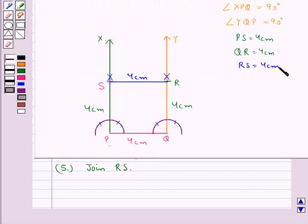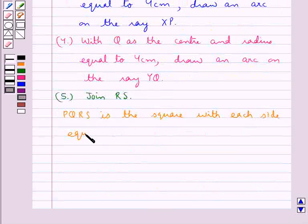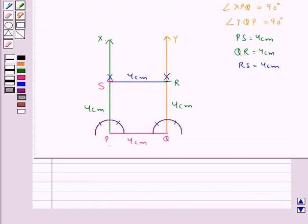This PQRS is the square with each side equal to 4 cm. Thus, we have obtained the square. This completes the session. Hope you have understood the solution of this question.